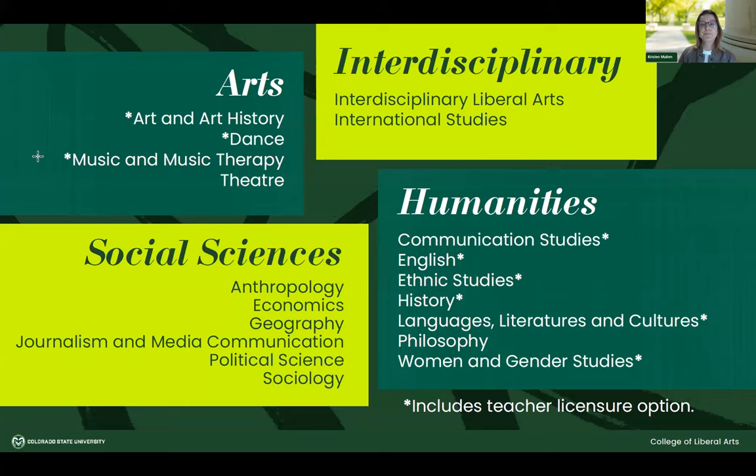In humanities, we have communication studies, English, ethnic studies, history, languages, literatures and cultures, philosophy, and women and gender studies. In social sciences, we have anthropology — which includes archaeology — economics, geography, journalism and media communication, political science, and sociology. These are all about studying people, why they do things, and how they affect their environment.